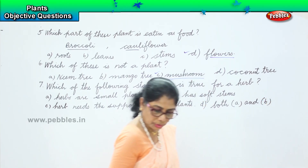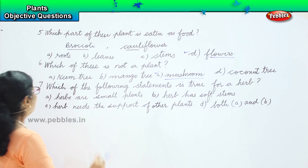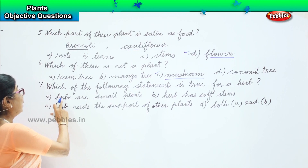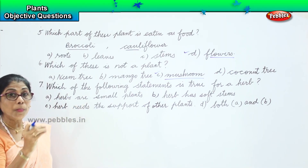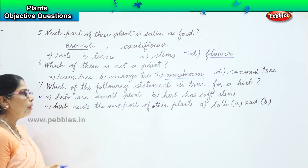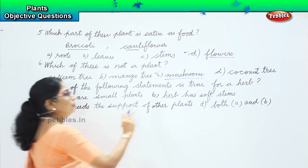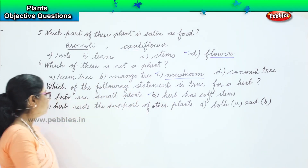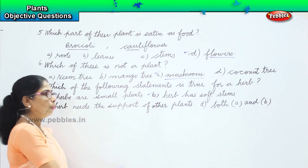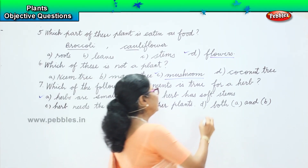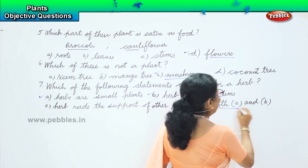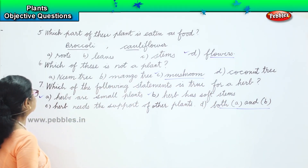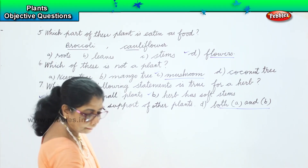Now we have to choose the correct answer. Which of the following statements is true for a herb? First statement — herbs are small plants. Is it correct? Yes. Herbs have soft stems. Yes, that's also correct. Herbs need support? No. So option D says both statement A and statement B are correct where the herb is concerned.